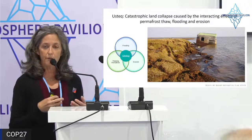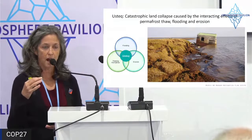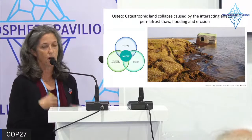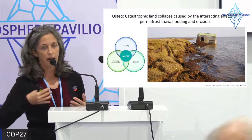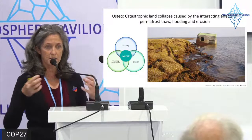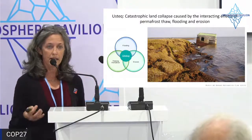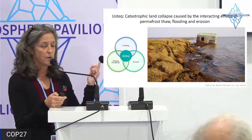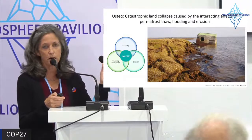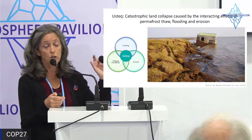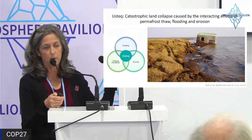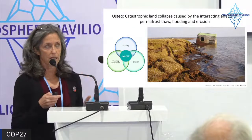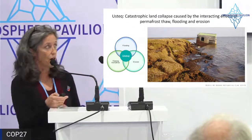Permafrost thaw causes ground collapse, making it more susceptible to flooding. Flooding means water sitting on the ground, which conducts heat into the ground leading to more thaw. Ground thaw turns solid-cement-like frozen ground into muck, leading to erosion, which leads to more thaw. Ushtek was recently added as a new hazard in the State of Alaska hazard assessment report, recognizing that these processes aren't happening in isolation but in this broader context.